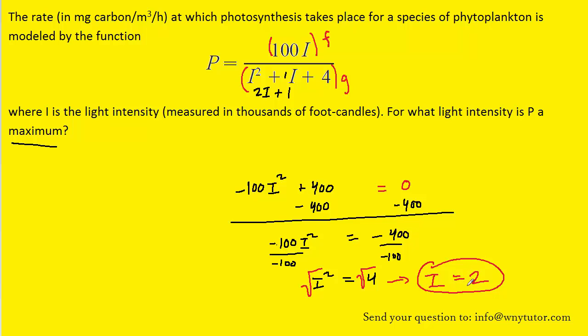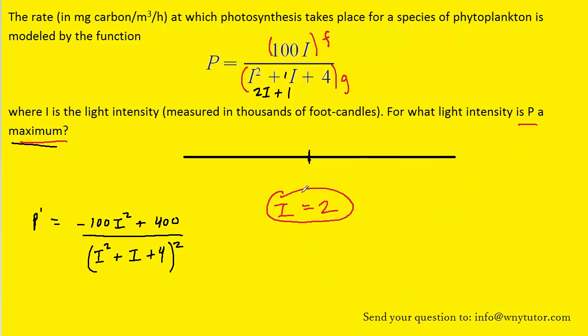Now we still need to confirm that this value for I indeed maximizes the value of P. And to do that, we can turn to the first derivative test. And in the first derivative test, we set our critical value for I, which was 2, at the center of a number line.